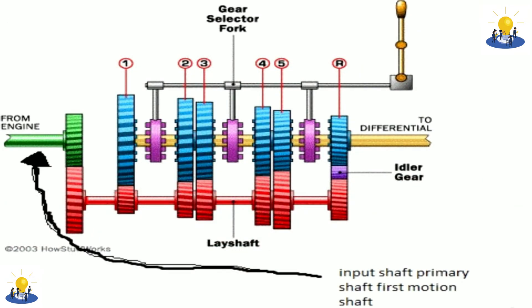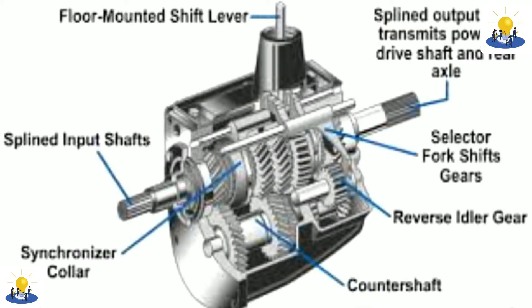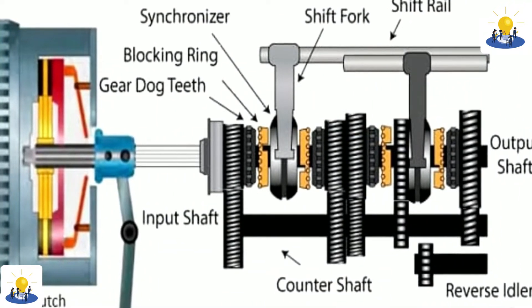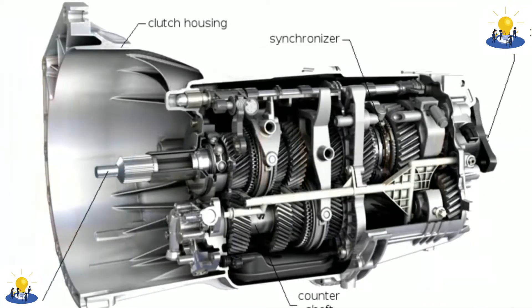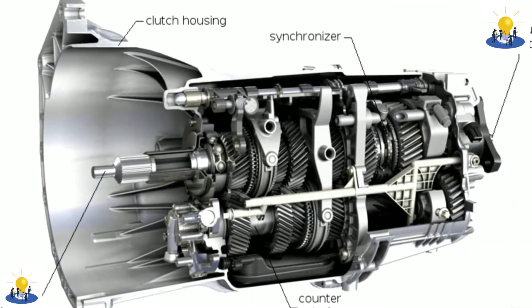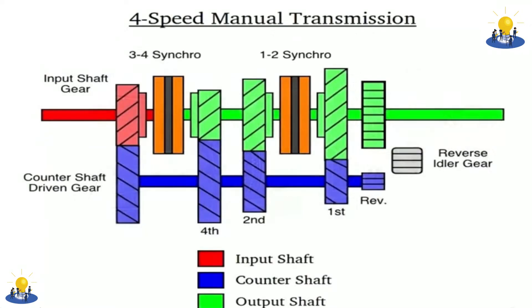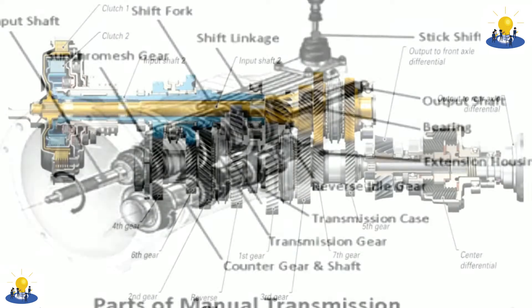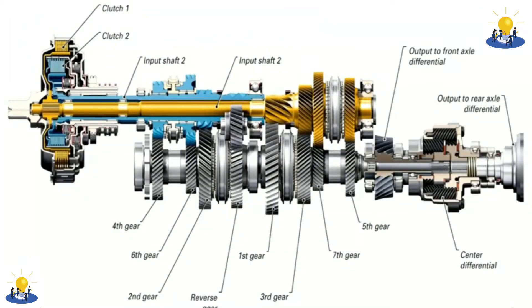In a transmission for transverse-engined vehicles and front-wheel drive cars, there are usually only two shafts — input and countershaft, sometimes called input and output. The input shaft runs the whole length of the gearbox, and there is no separate input pinion. These transmissions also have an integrated differential unit, which is connected via a pinion gear at the end of the counter/output shaft.